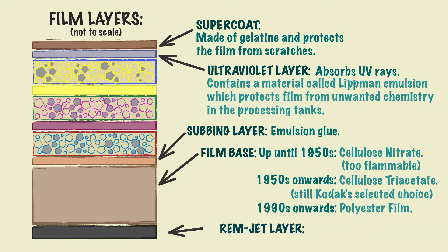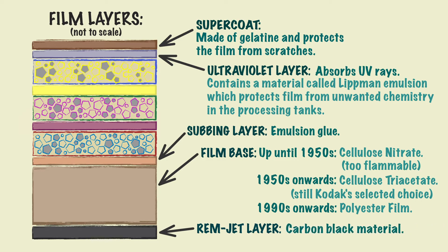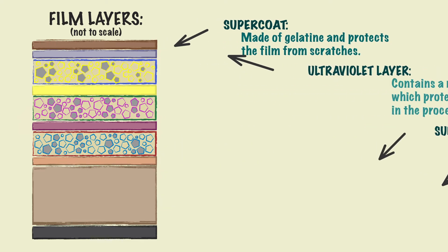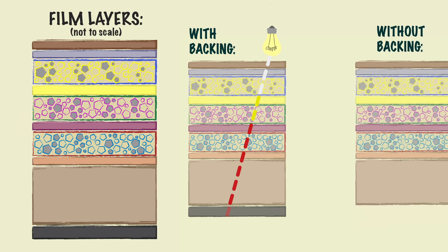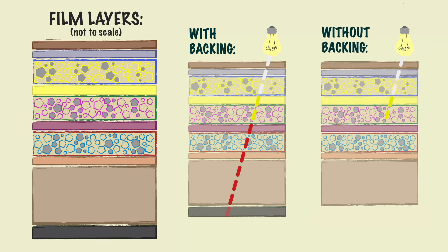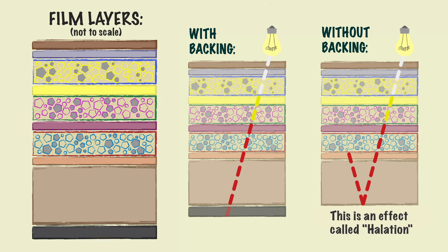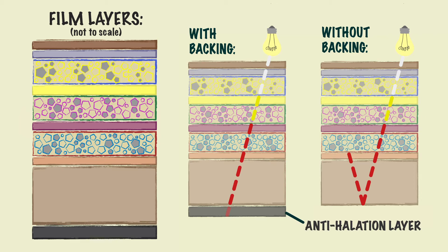There is also the REM jet layer, made from carbon black material. During exposure, this backing prevents light bouncing off the back surface of the film strip, as well as from the pressure plate in the camera. Without this backing layer, the film could be re-exposed, leading to halos around bright objects. This is an effect called halation, which is why the REM jet layer is also referred to as the anti-halation layer.